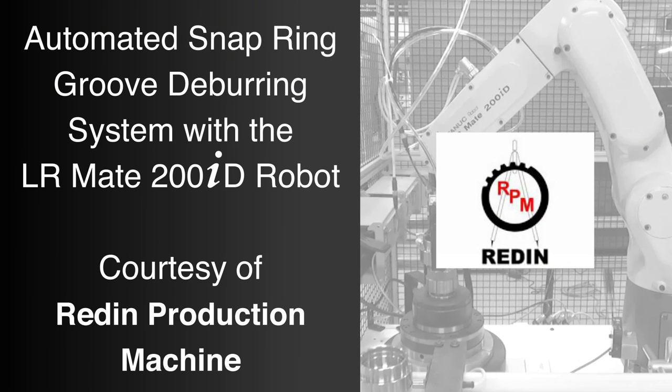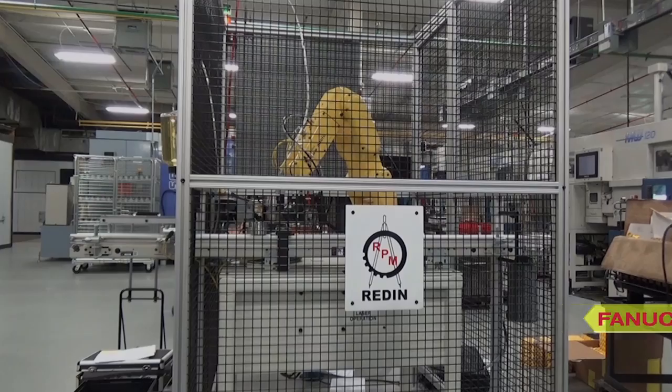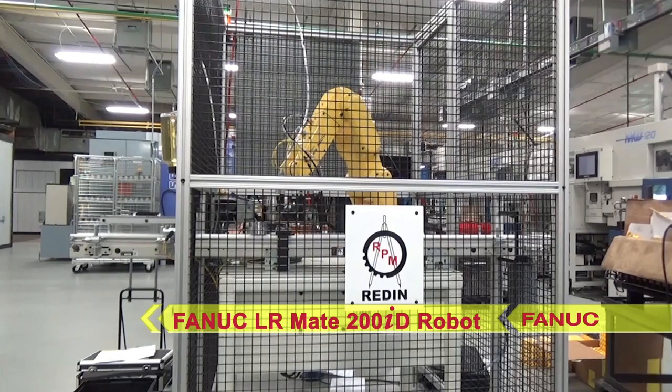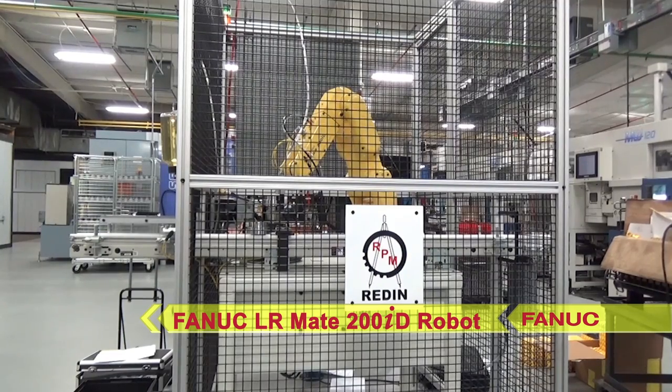FANUC America Authorized System Integrator Redden Production Machine developed this snap ring groove deburring system using a FANUC LR Mate 200ID robot to automatically deburr the parts in less than 30 seconds.